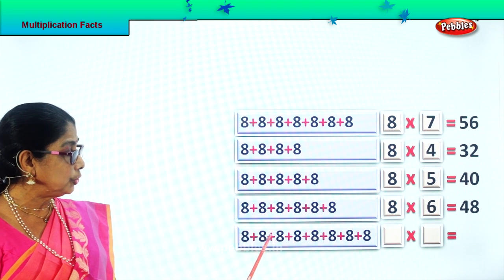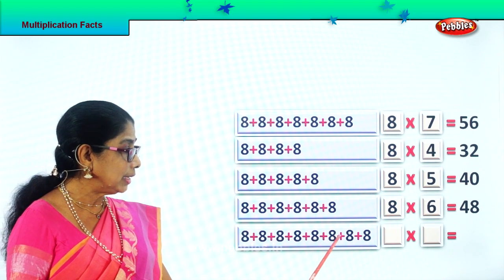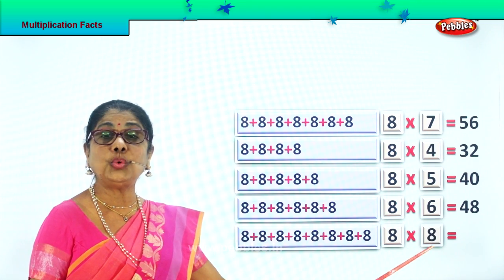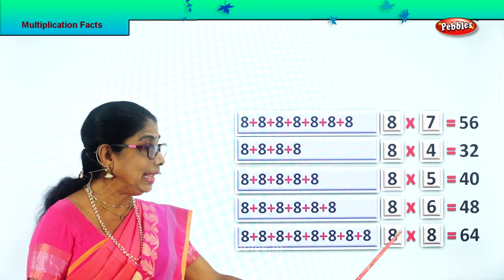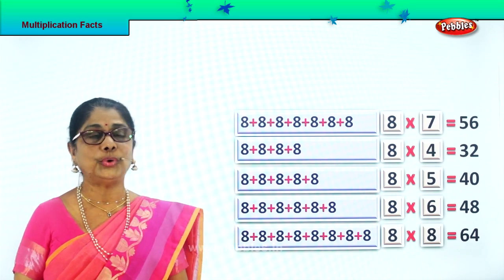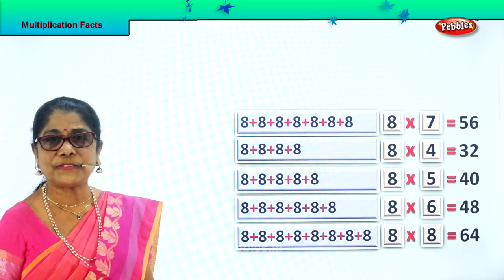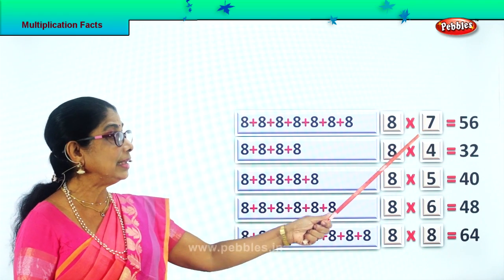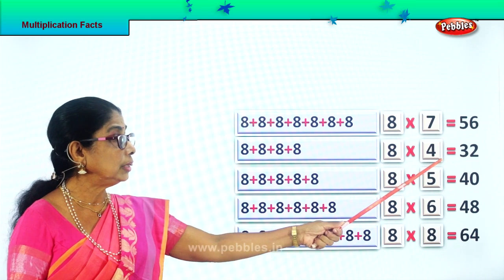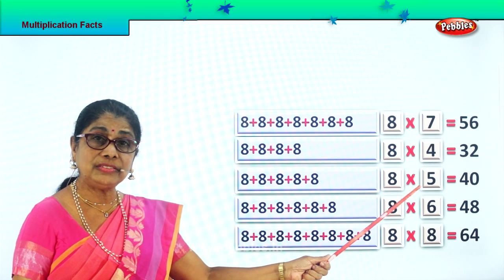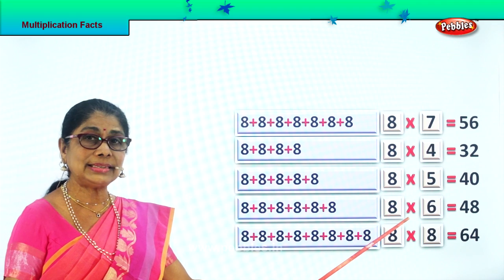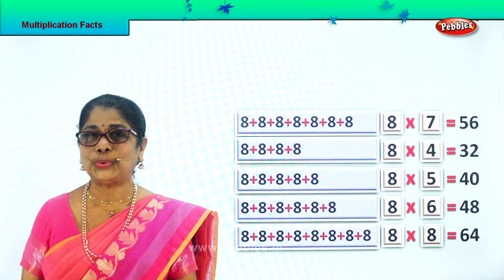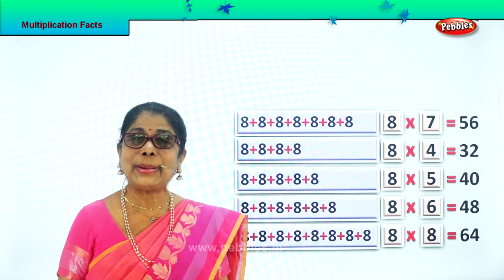Finally, you have 1, 2, 3, 4, 5, 6, 7, 8. Eight times. Eight into eight. When you add up all this, eight eights are sixty-four. Eight sevens are fifty-six. Eight fours are thirty-two. Eight fives are forty. Eight sixes are forty-eight. Eight eights are sixty-four. So you are learning multiplication.